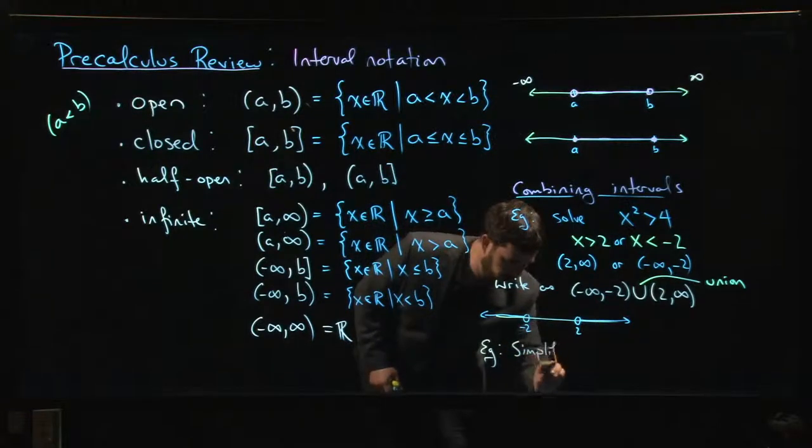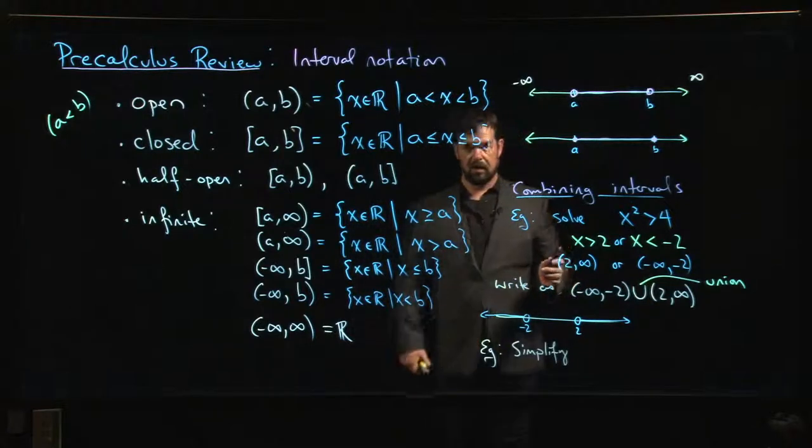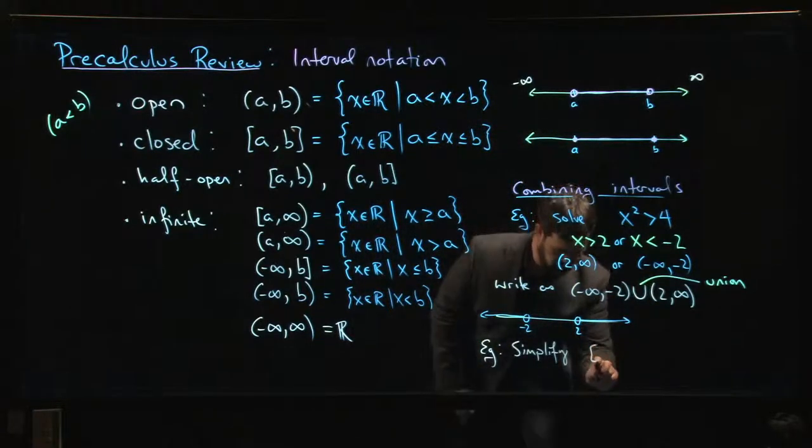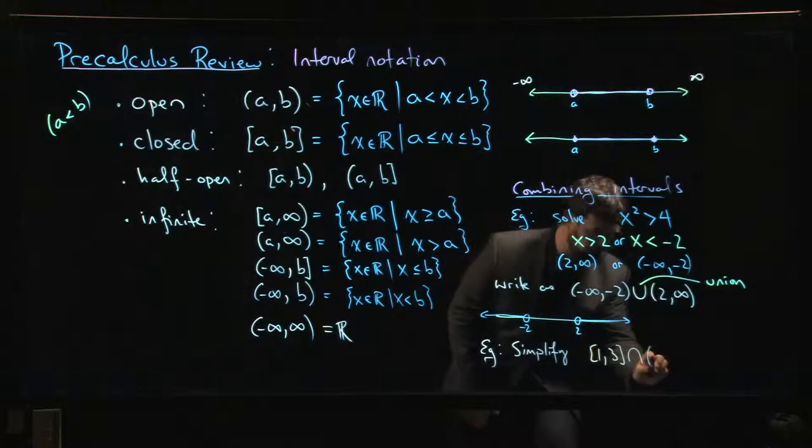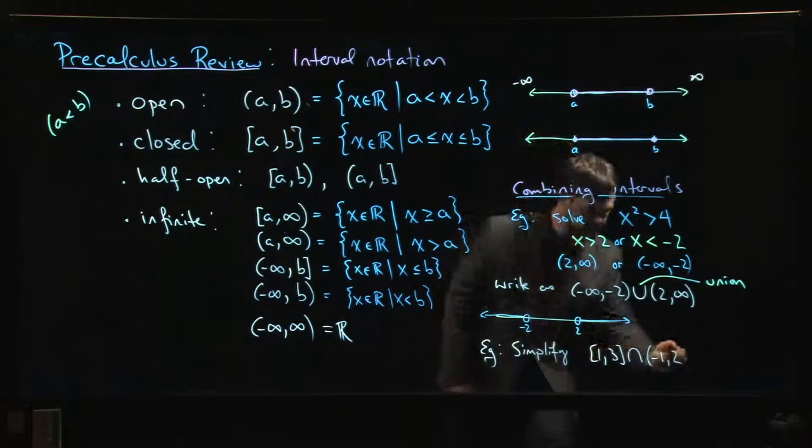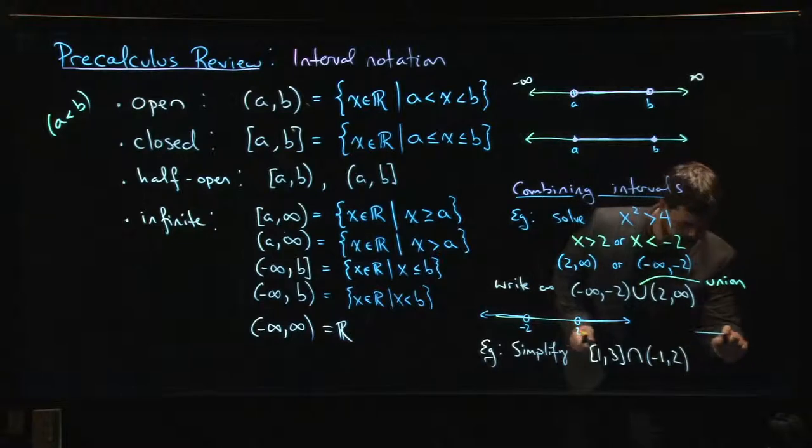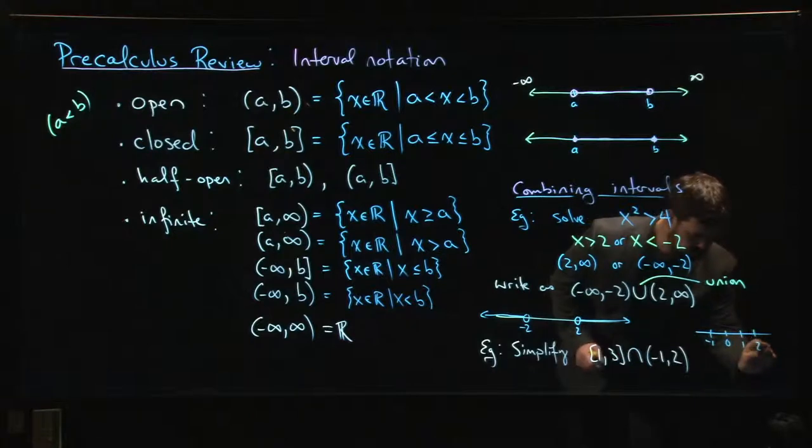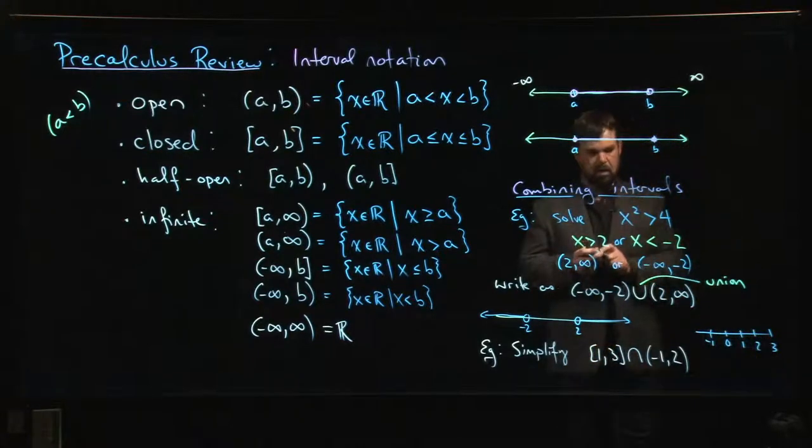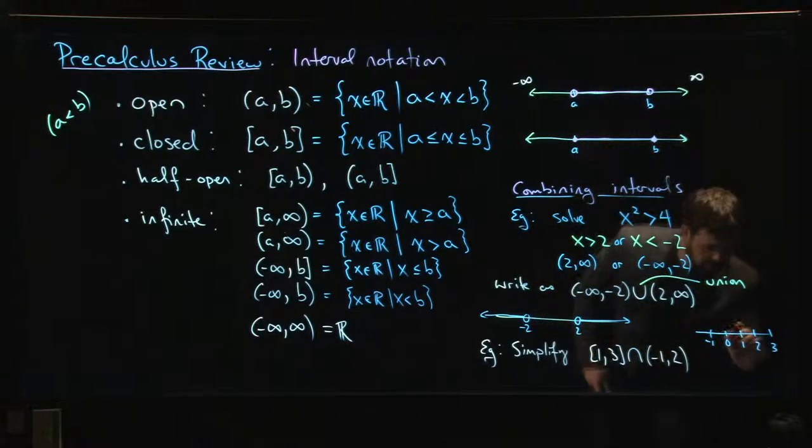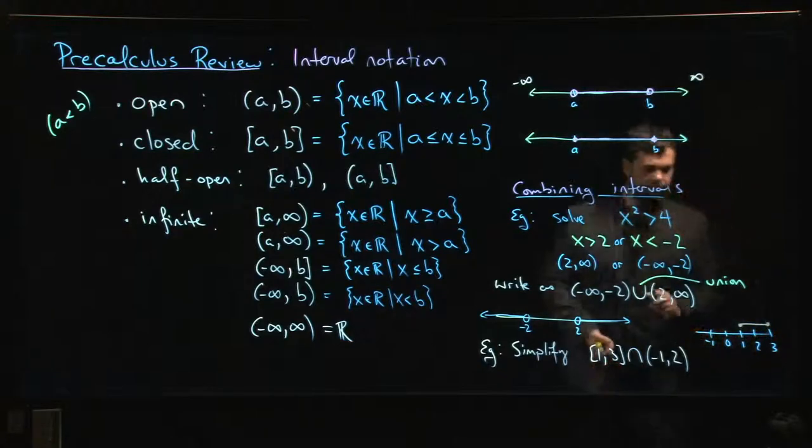So let's say somebody asks you to simplify the intersection of the interval from 1 to 3 with the interval from minus 1 to 2. If you think about that on a number line - minus 1, 0, 1, 2, 3 - we have two intervals. One interval is here, the other one is there.